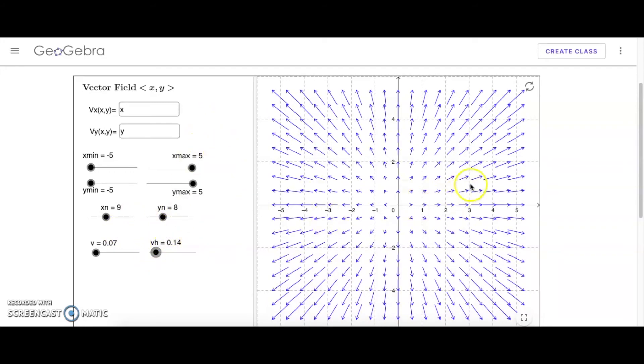So it's a really nice app and it allows you to sketch almost any vector field as long as negative five to five will really show you everything you're interested in. So that's our first example.